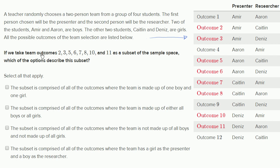Then they tell us, if we take outcomes 2, 3, 5, 6, 7, 8, 10, and 11 — which they marked in red right over here — as a subset of the sample space, which of the options describe this subset? Let's read these and think about which of these describe the subset. We might be able to select more than one of these.